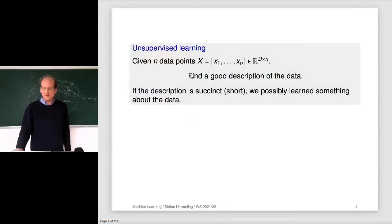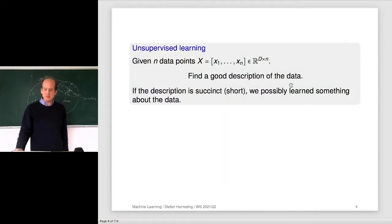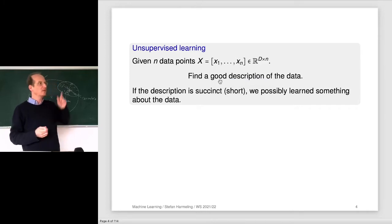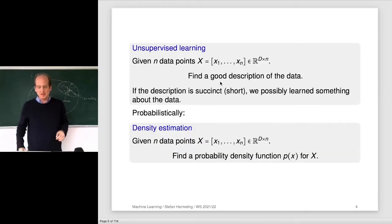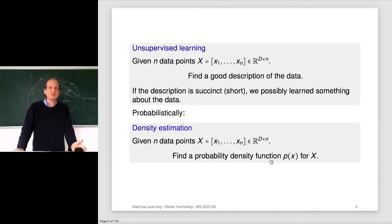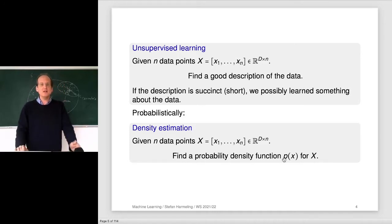The overall goal is to find a good description of your data. That description could be the principal axes, or different clusters, or a combination of both. Probabilistically speaking, we want to find a probability density function of our data — a more general point of view. By estimating the mean and the covariance matrix, that's exactly what we're doing: fitting a Gaussian distribution, estimating its parameters, as in PCA. No matter whether the data is really from a Gaussian, if you apply PCA you are fitting a Gaussian.